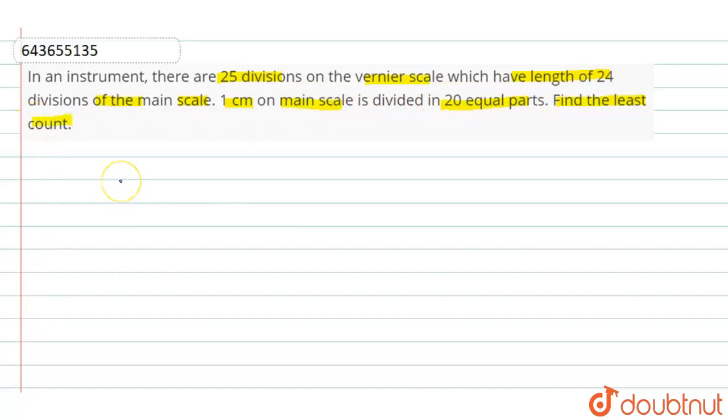So, here according to the question, 25 vernier scale division, that is 25 VSD, is equal to 24 main scale division, 24 MSD.